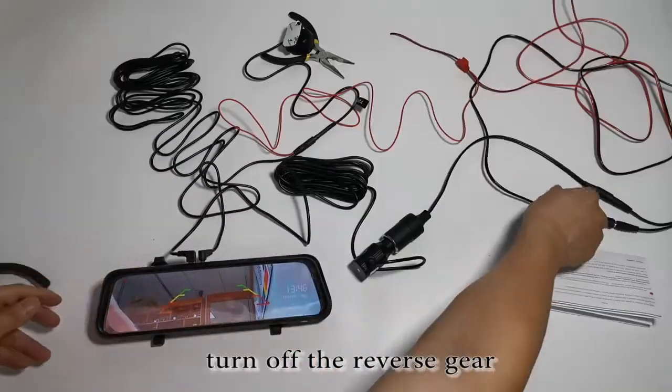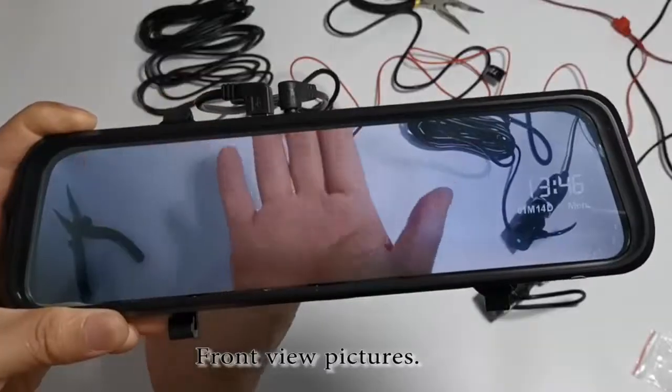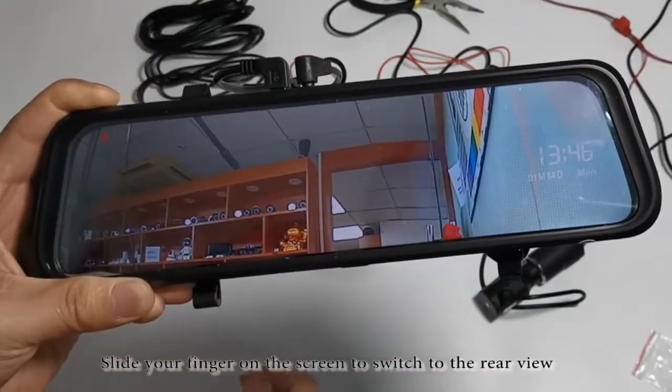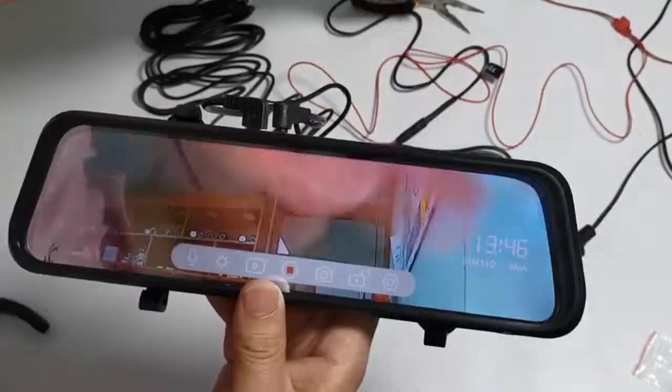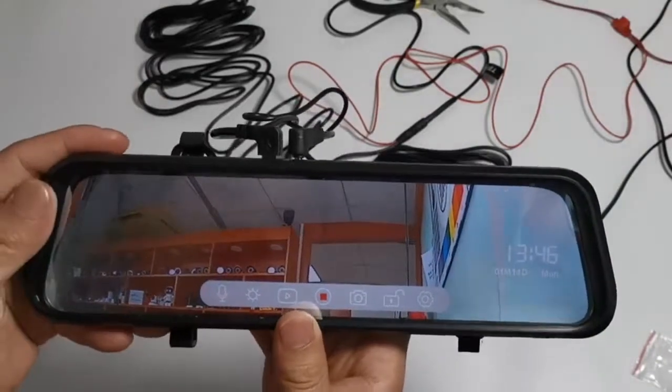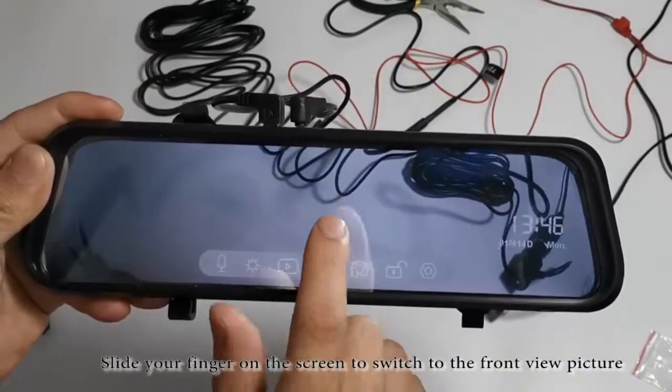Turn off the reverse gear. Front view pictures. Slide your finger on the screen to switch to the rear view. Slide your finger on the screen to switch to the front view picture.